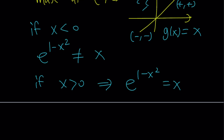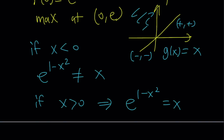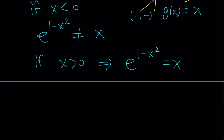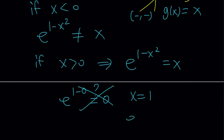You can easily find the solution by testing a special value. We said f of 0 equals e, so replacing x with 0 gives e to the power 1 minus 0 equals 0 — that's not true. But if you replace x with 1, you get e to the power 0 equals 1, which is true. So x equals 1 is a solution, and that is the only solution for this equation.